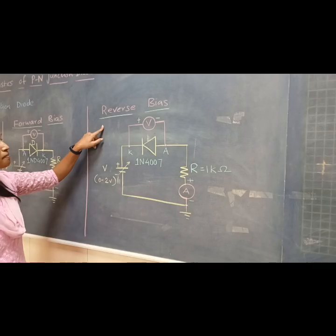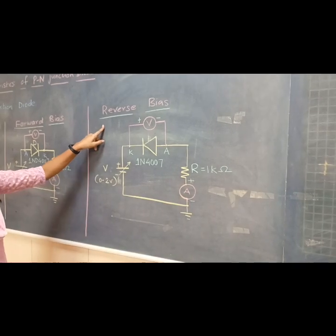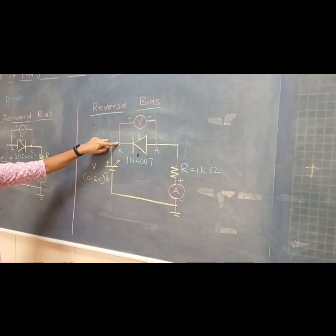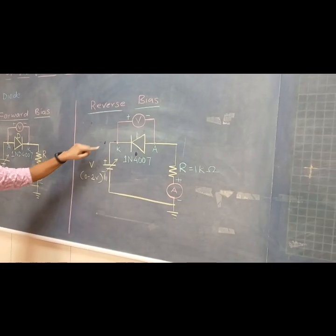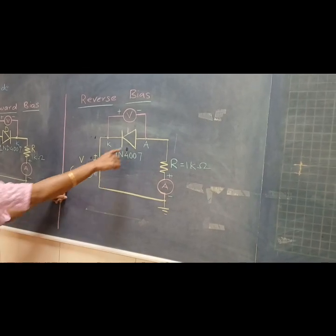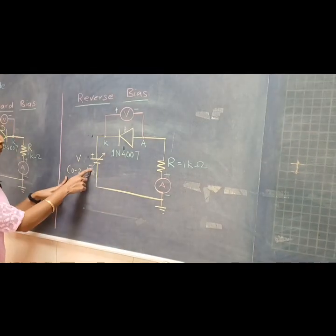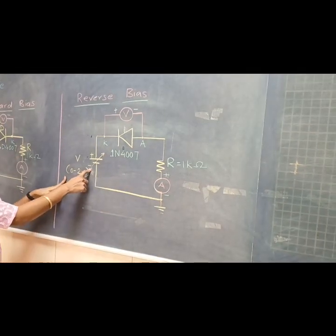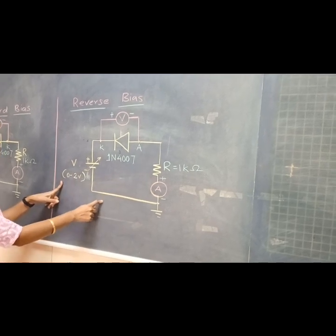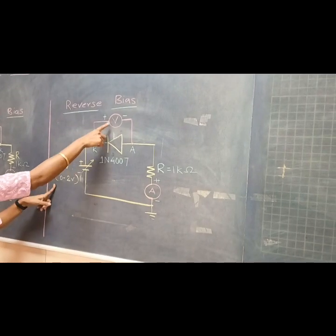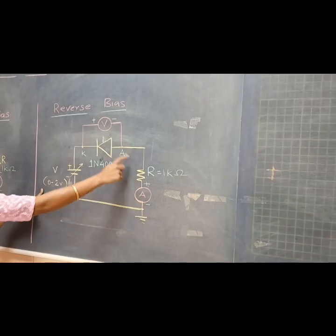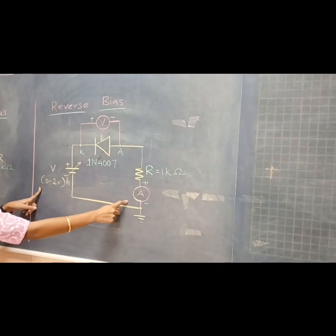For reverse bias characteristics, we just have to flip the diode — meaning the cathode terminal is connected to the positive polarity of the battery and the anode to the negative terminal through the resistor. Again, we measure voltage across the diode and current flowing through the diode.